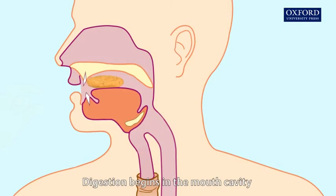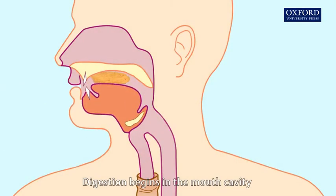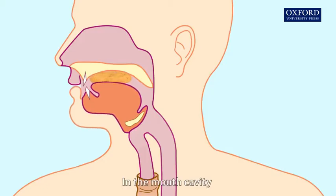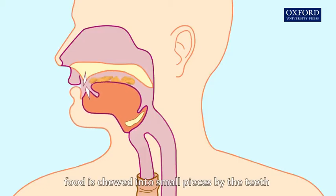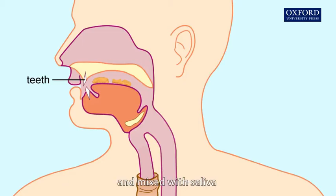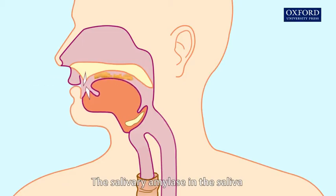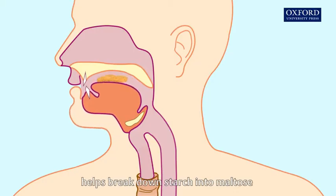Digestion begins in the mouth cavity. In the mouth cavity, food is chewed into small pieces by the teeth and mixed with saliva. The salivary amylase in the saliva helps break down starch into maltose.